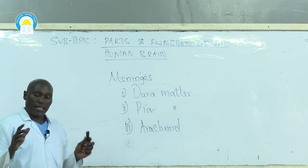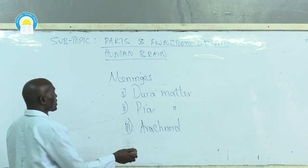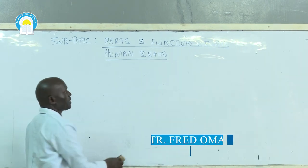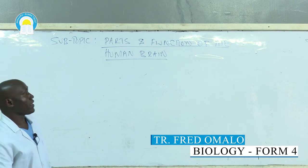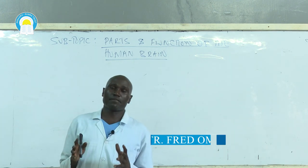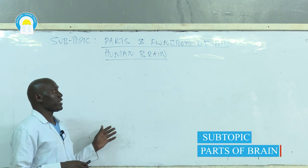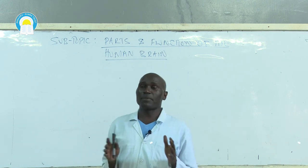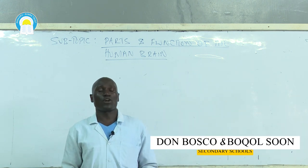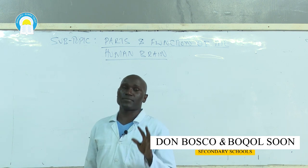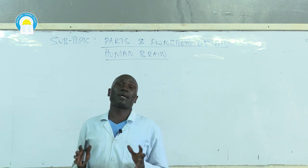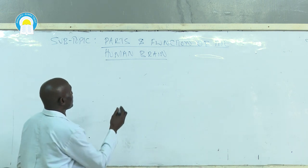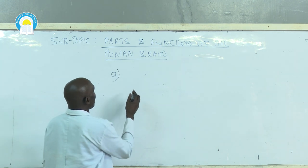In this lesson we are supposed to start on the parts of the brain and look at the functions of the various parts. The brain is divided into three main parts. We know the human brain can be divided into several other parts, but for the purposes of the syllabus we will only look at three main parts and the functions of some major parts.